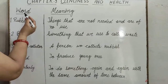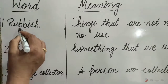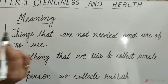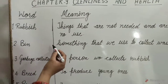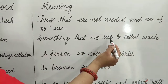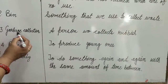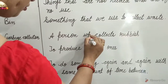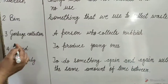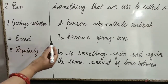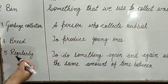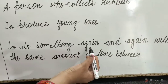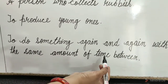Children, let's learn word meanings. 1. Rubbish means things that are not needed and are of no use. 2. Bin means something that we use to collect waste. 3. Garbage collector means a person who collects rubbish. 4. Breed means to produce young ones. 5. Regularly means to do something again and again with the same amount of time between.